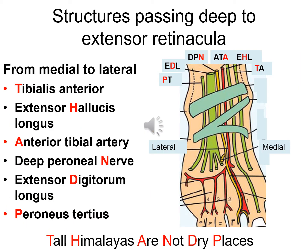Structures passing deep to extensor retinaculum from medial to lateral: tibialis anterior, extensor hallucis longus, anterior tibial artery, deep peroneal nerve, extensor digitorum longus and peroneus tertius. An easy mnemonic to remember this is 'Tall Himalayas Are Not Dry Places' — T for tibialis anterior, H for extensor hallucis longus, A for anterior tibial artery, N for deep peroneal nerve, D for extensor digitorum longus and P for peroneus tertius.